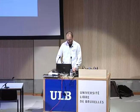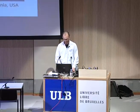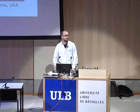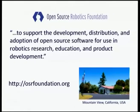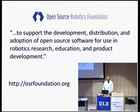This talk is about ROS and friends. We're from the Open Source Robotics Foundation. What we do is we support the development, distribution, and adoption of open source software for use in robotics research, education, and product development. That's very broad — we can fit a whole lot of things in there. That's our website, OSR Foundation. We have a little building there in Mountain View, California, out in Silicon Valley.